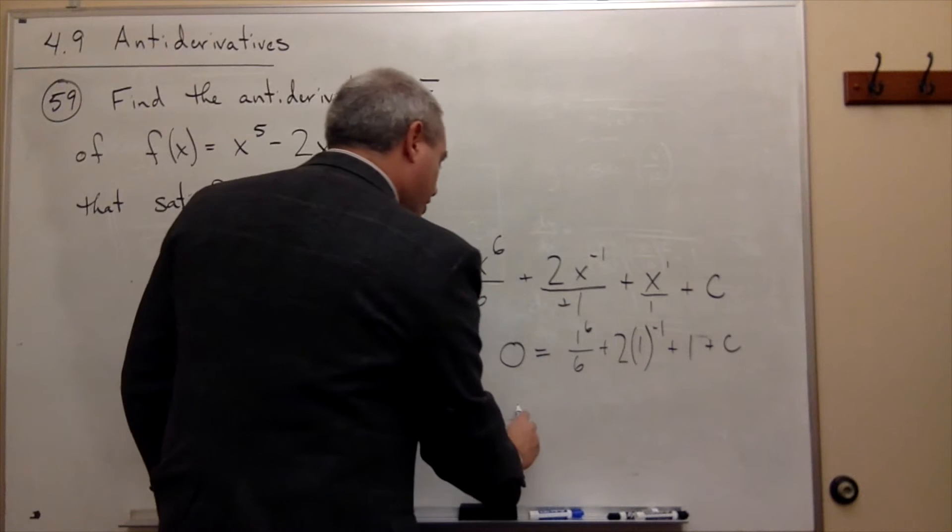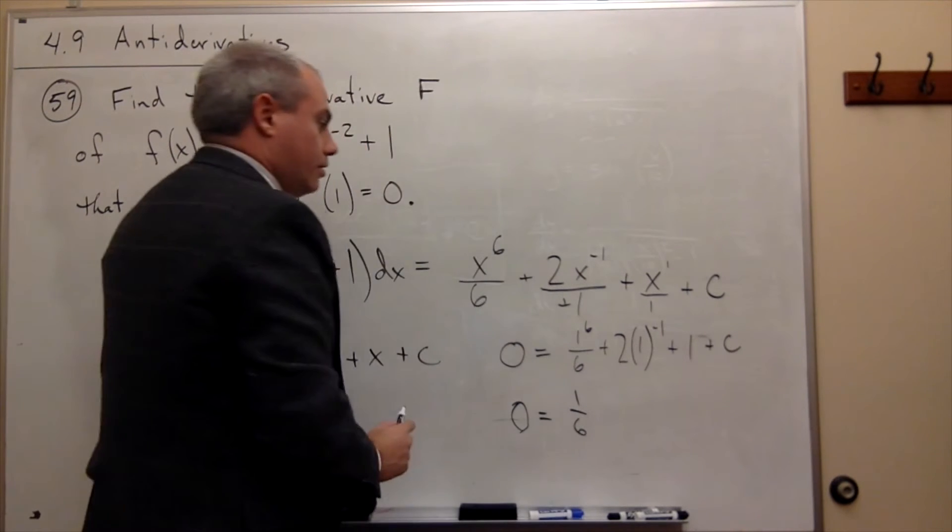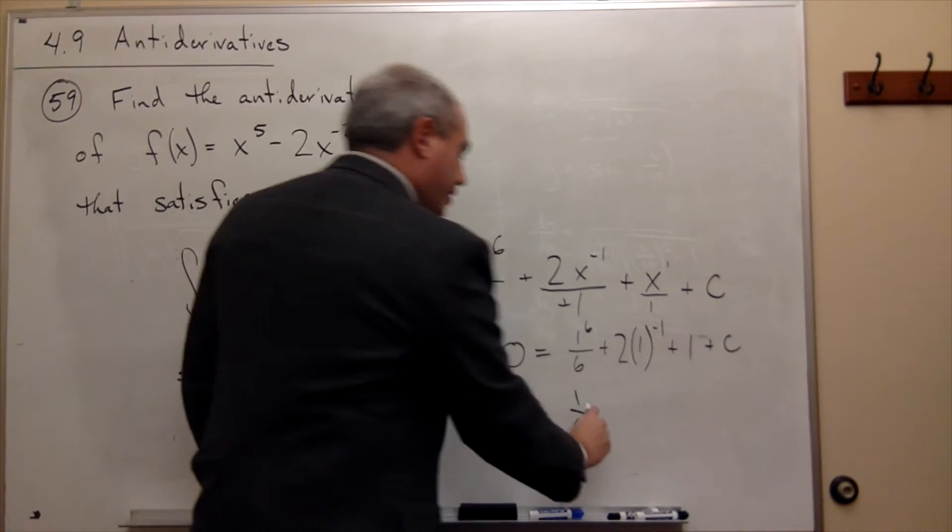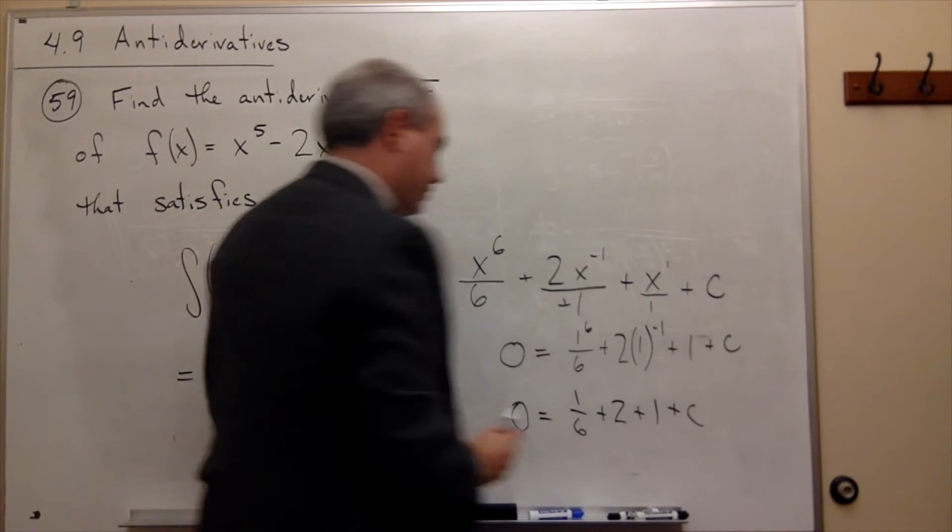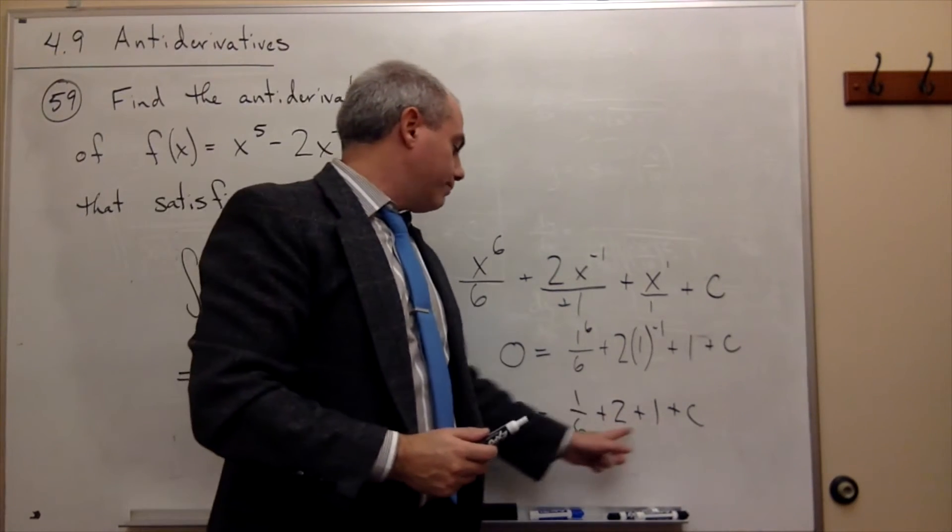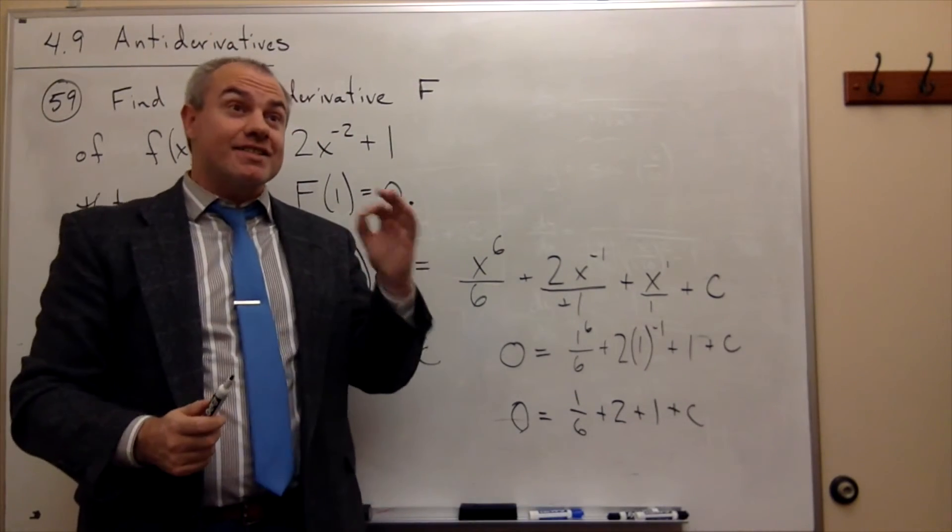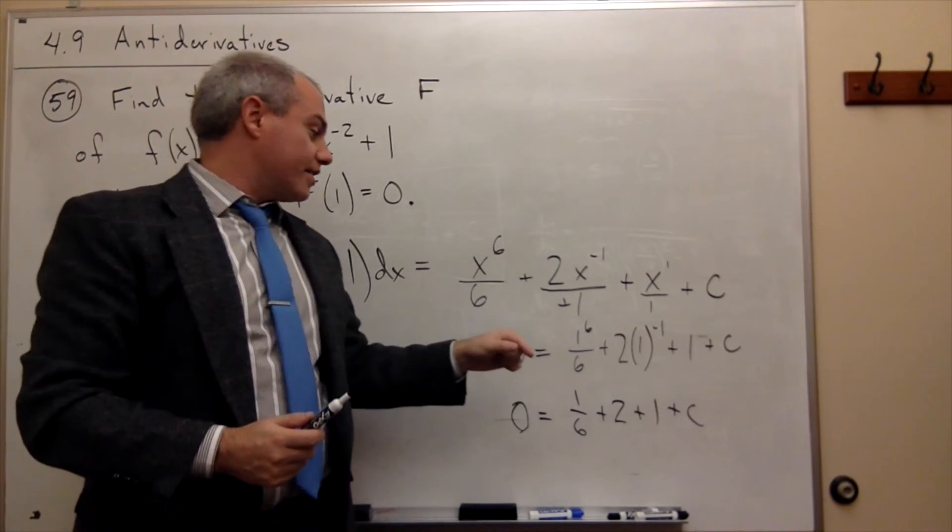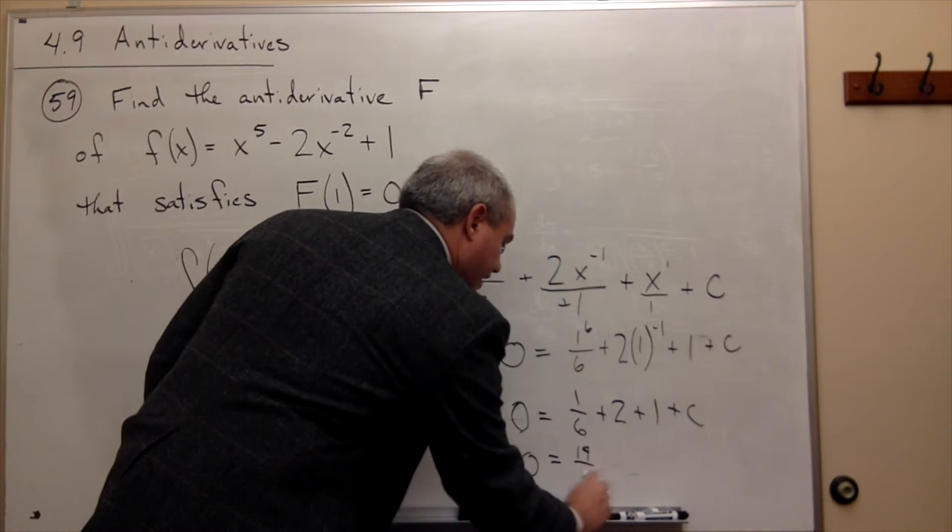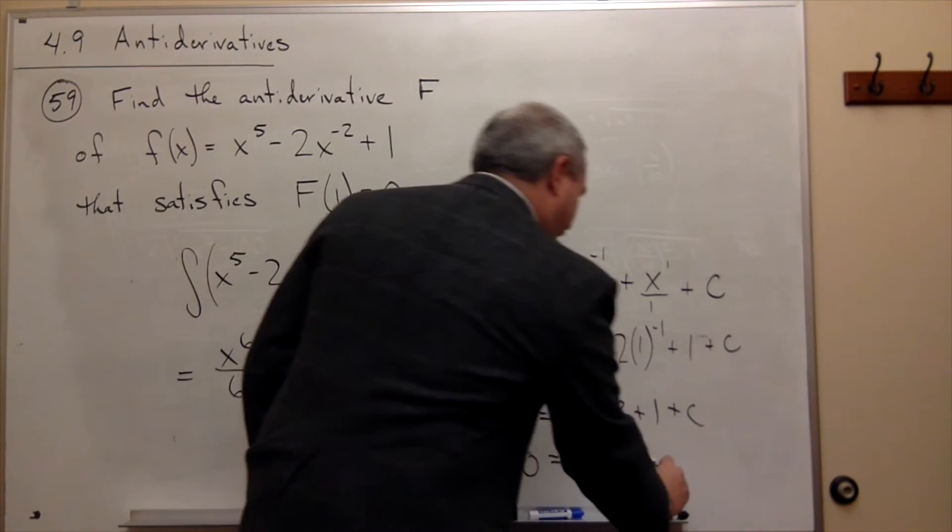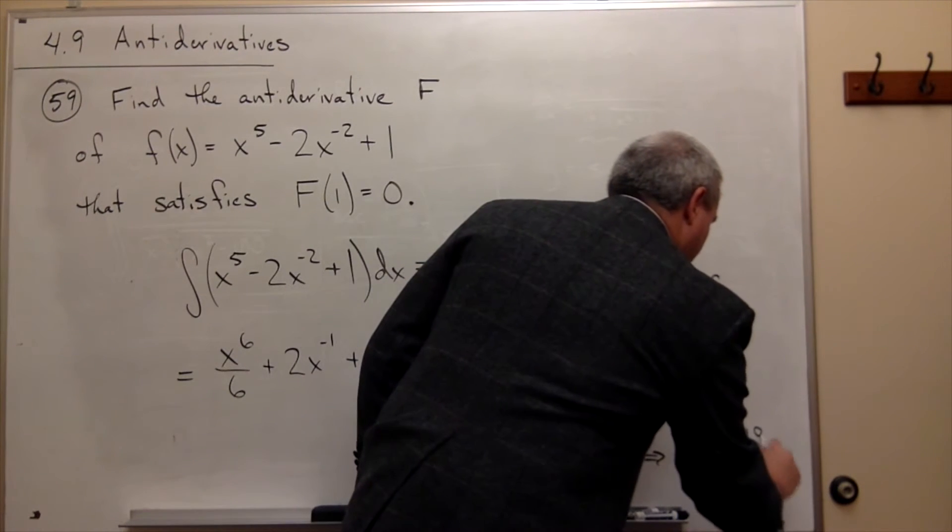In other words, 0 is equal to, this is 1 sixth. Next, 1 to the minus 1 is just 1, so plus 2, plus 1, plus c. So I've got 2 plus 1 plus a sixth. That's 3. How many sixths is 3? It's 18 sixths, plus 1 more is 19 sixths. So 0 is equal to 19 over 6, plus c. So that implies that c is equal to negative 19 over 6.